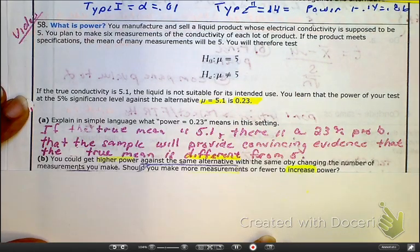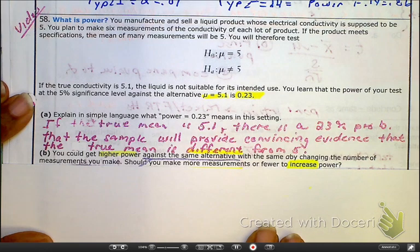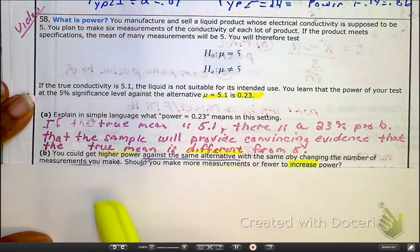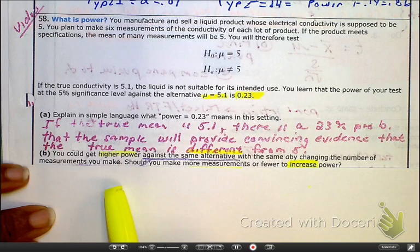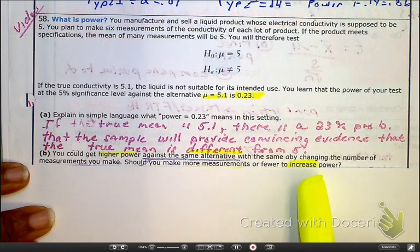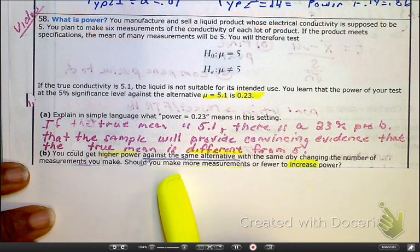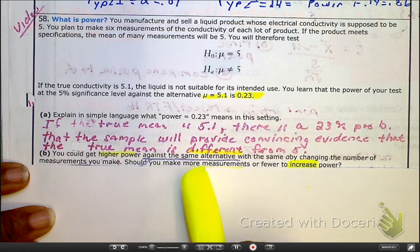You need to pause. Now, let's look at some of the language here. We want to get a higher power. We're asking, should we increase, or what do we need to do to get a higher power? Here, we want power against the alternative hypothesis.